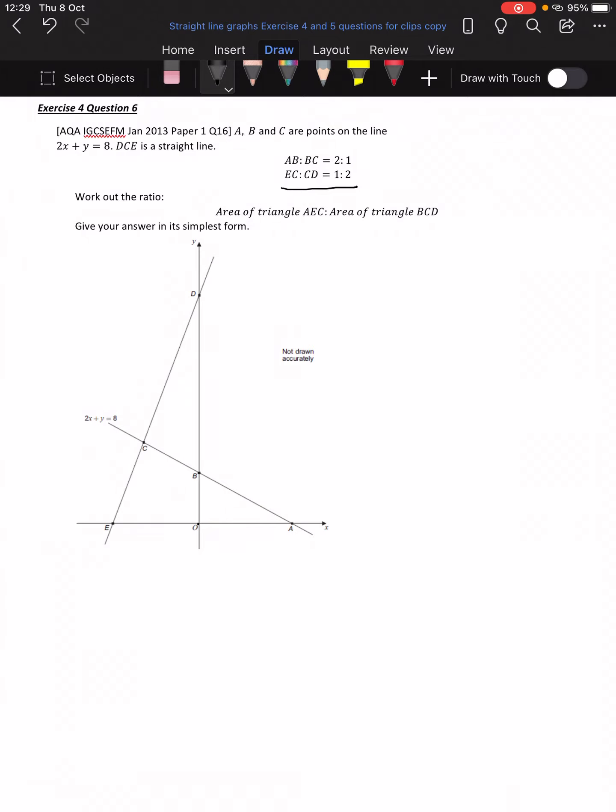Work out the ratio of the area of triangle AEC, and I'll highlight that when we get to that point, to area of triangle BCD. And what we kind of ascertained is that if we can get the coordinates of A, B, C, and D, E as well, then we should be able to work out the area of each triangle, and that will make life a bit easier. So that's our first step. That's how we're going to approach this. We're going to try and get the coordinates of every single point.